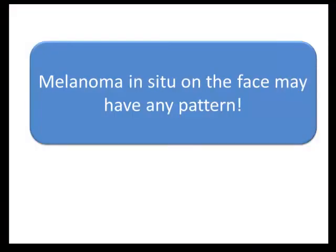But melanoma in situ on the face may have any pattern, not only circles. You may also see a pattern of dots, like in this case, and the dots may be arranged around the follicles. This could be a solar lentigo with regression — which we call lichen planus-like keratosis — this could be melanoma in situ, or this could be pigmented actinic keratosis. If there are no circles, it does not exclude melanoma in situ on the face, but if there are circles, it's a good clue to melanoma in situ.